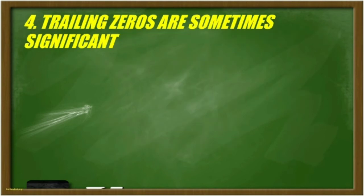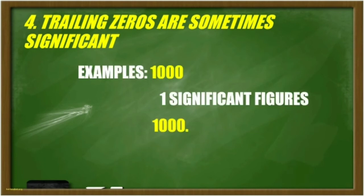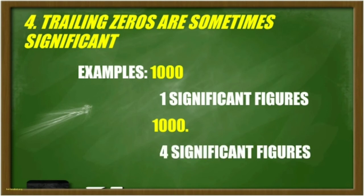In rule number 4, trailing zeros are sometimes significant. Trailing zeros are zeros written after the non-zero digits. For example, in 1000, there is only 1 significant figure and the other 3 zeros are not counted. But if there is a decimal point, there are 4 significant figures. Trailing zeros are significant if there is a decimal point after it, as long as the leading number is a non-zero digit.